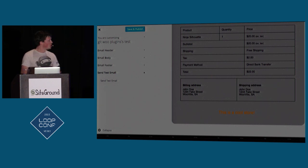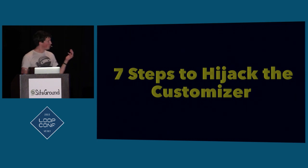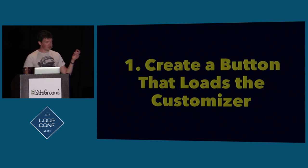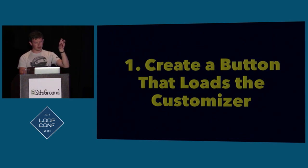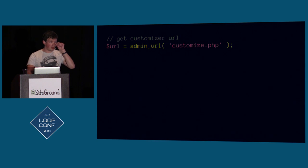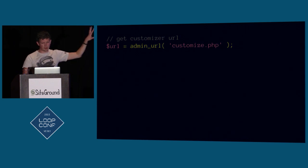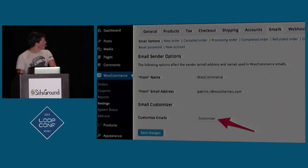This is what I think all plugin settings should look like for anything to do with a front end. There are seven steps to do this. The first thing is creating the button that loads the customizer — you grab the admin URL and tell it to load the customize.php file. This opens the regular customizer page. You also need to add a setting to your WooCommerce settings page, so at least you've gotten rid of the ugly settings and added a clean button.